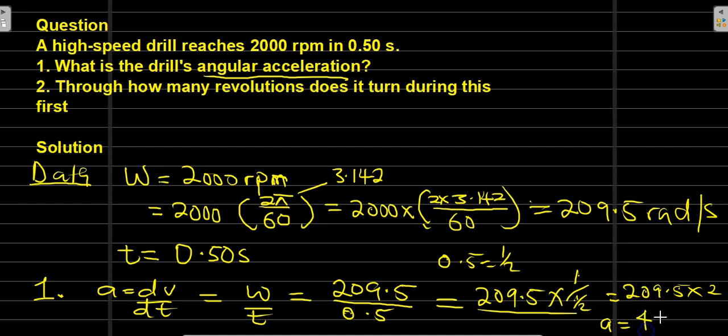Our final answer for the acceleration is going to be 419 radians per second squared.